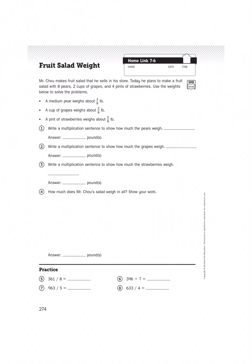We're on our home links, Unit 7, Lesson 6, so let's take a look at the setup for this number story problem. It says Mr. Chow makes fruit salad that he sells in his store. Today he plans to make a fruit salad with eight pears, two cups of grapes, and four pints of strawberries. Use the weights below to solve the problems.